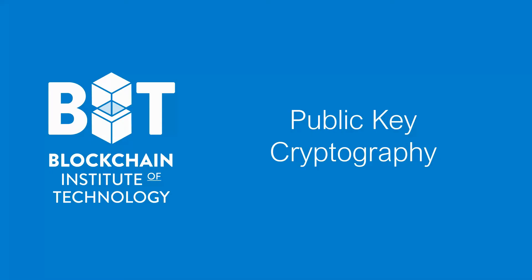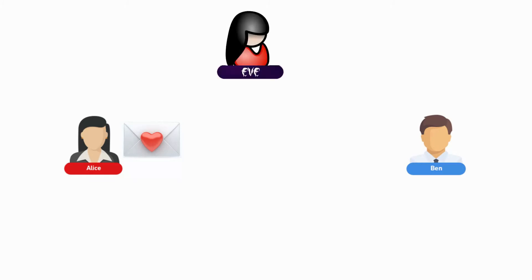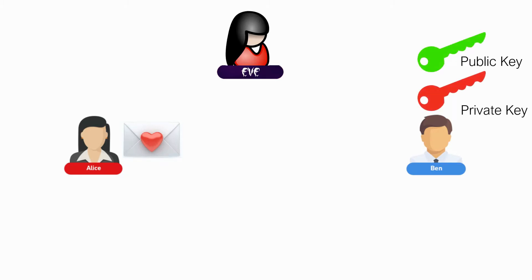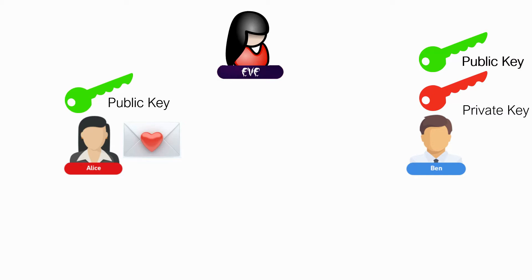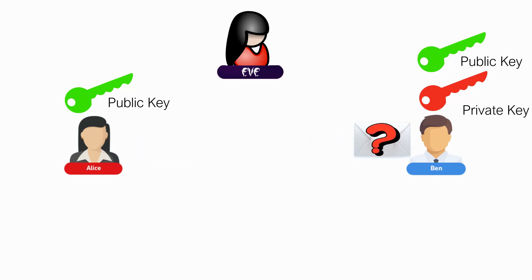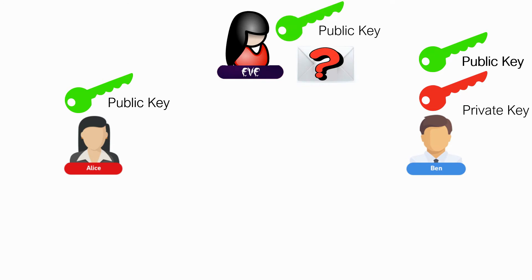Now let's look at a different approach: public key cryptography, which is used extensively in blockchain. In this scenario, Alice wants to send a message to Ben, and we have the same adversary, Eve. Ben has two keys: a public key and a private key. Alice can take her message and encrypt it using Ben's public key, then send the encrypted message to Ben. The only person that can read it is Ben, because he has the private key. Even if Eve gets hold of the public key, it doesn't help her — stealing a public key does no good, so it's perfectly okay for Ben to share his public key with anyone, since all it does is encrypt messages.